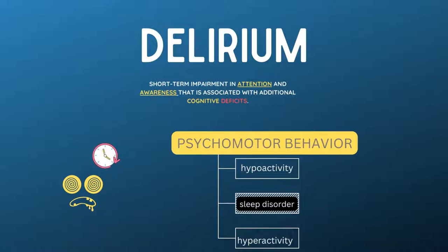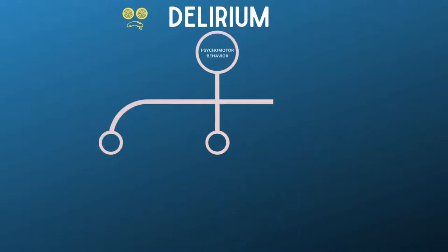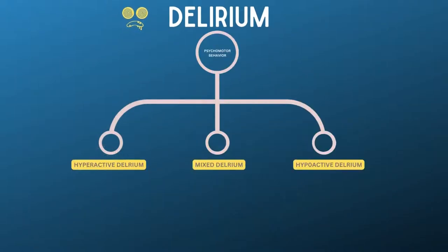There are three subtypes of delirium, depending on the psychomotor behavior: hyperactive delirium, hypoactive delirium, and mixed delirium.